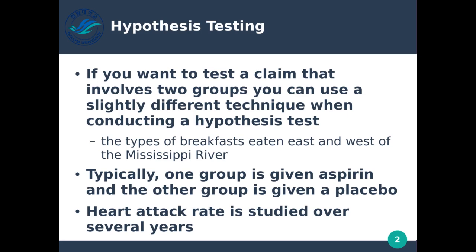People east of the Mississippi don't really affect the population west of the Mississippi. Whenever we're doing random sampling of the individual populations and we want to compare both populations together, we want to compare the types of breakfasts eaten east and west of the Mississippi. We have two separate groups and we want to compare them in some ways.